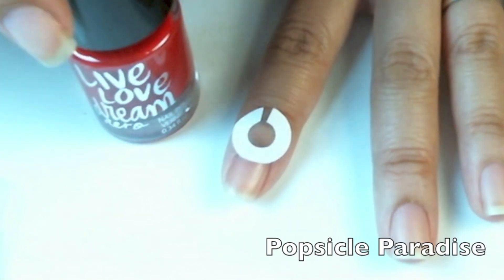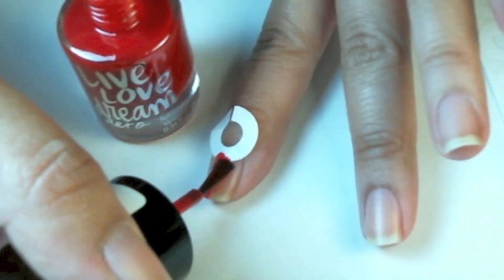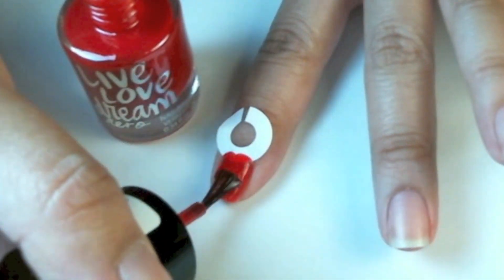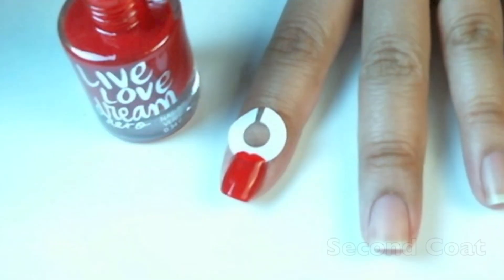Taking Popsicle Paradise from Aeropostale nail polish brand, I'm going to apply a thin coat. I love this nail polish, it's like a jelly. Then I'll apply my second coat.